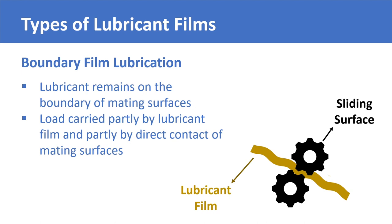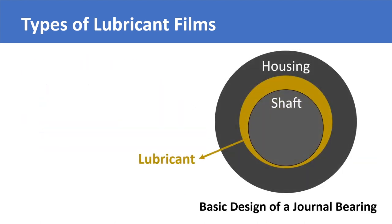Now let's look at another type. In a journal bearing, the film of lubricant is not just there to cover the crests and troughs, but it does not let any part of the shaft come into direct physical contact with the bearing. The lubricant oil is pressurized enough to maintain a thick film such that the shaft keeps rotating in the lubricant without ever touching the boundaries.